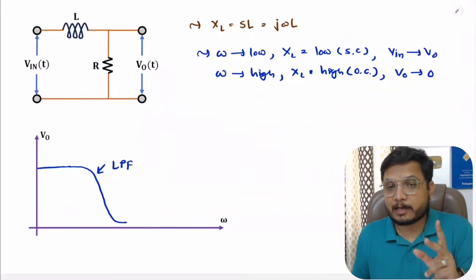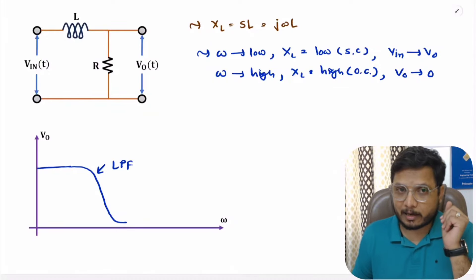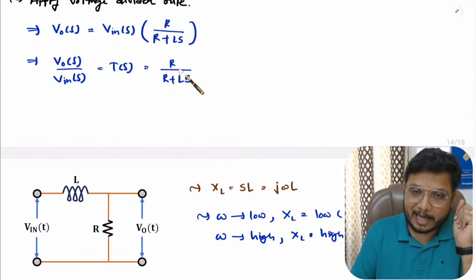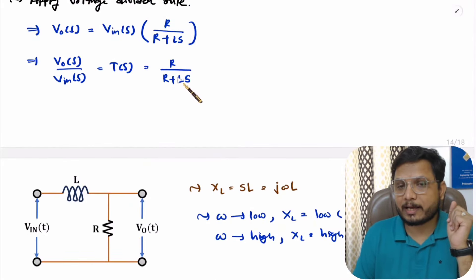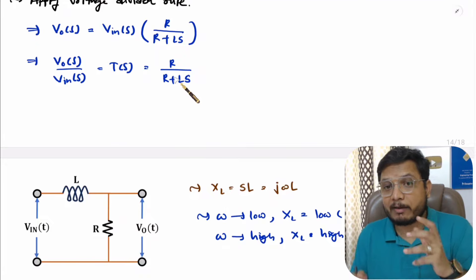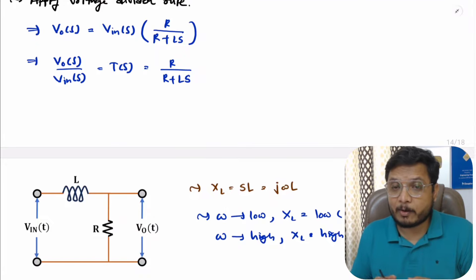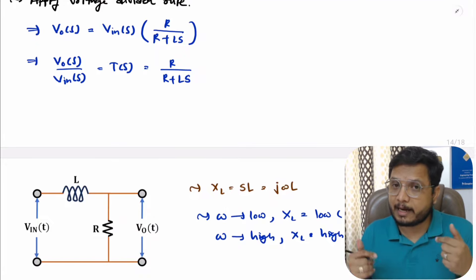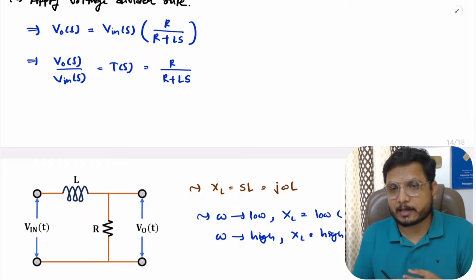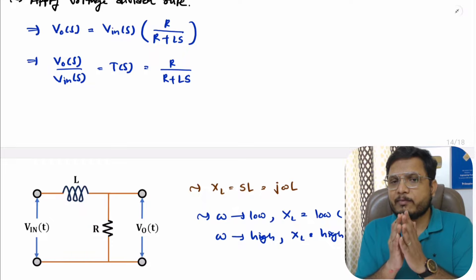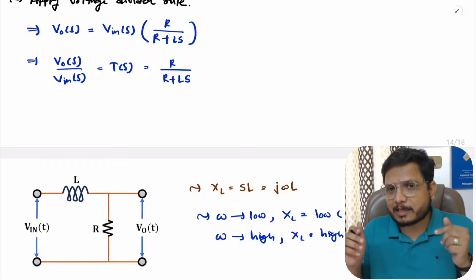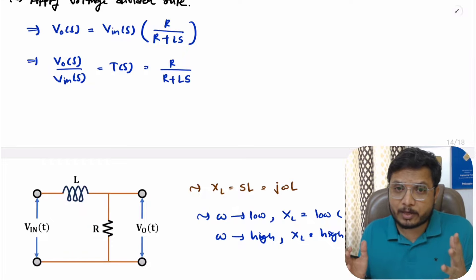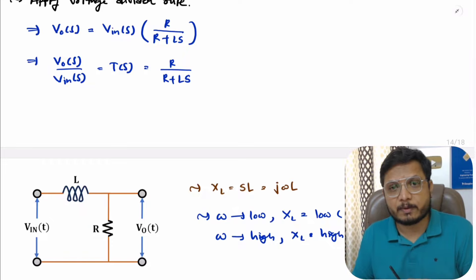That is how one can identify high pass and low pass RL circuits and derive their transfer functions. I hope you now have a fair idea about RL circuits with high pass and low pass filters. If any confusion remains, just place it in the comment section — I'll be happy to help. Thank you so much for watching this video.